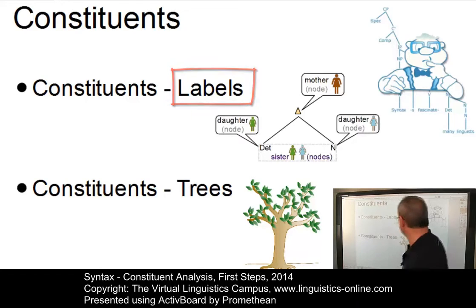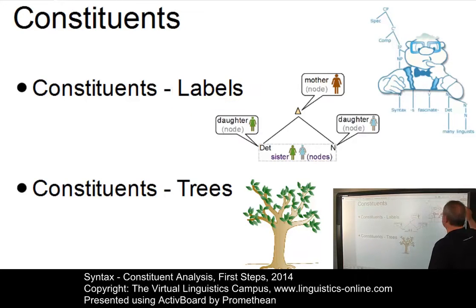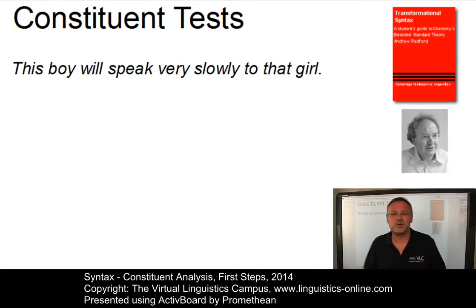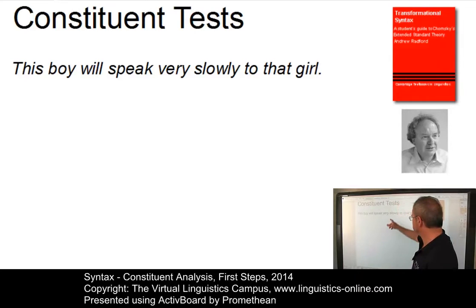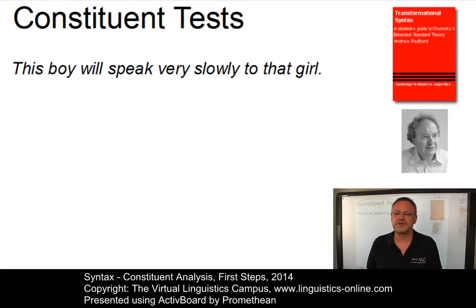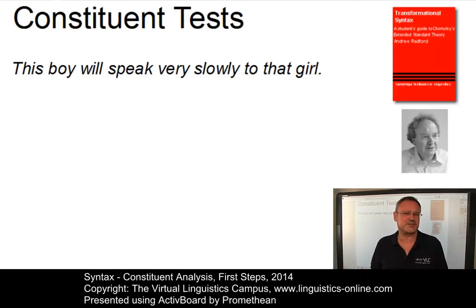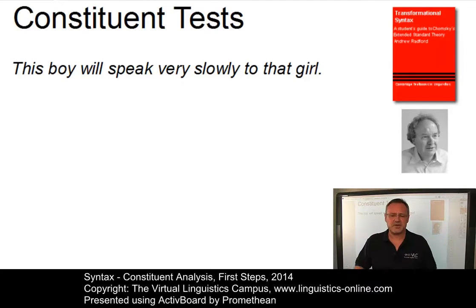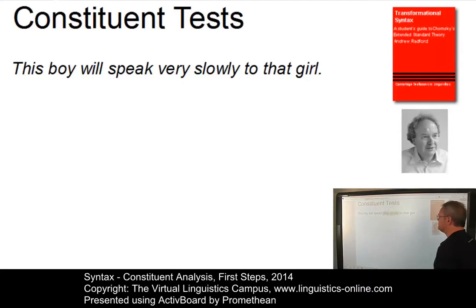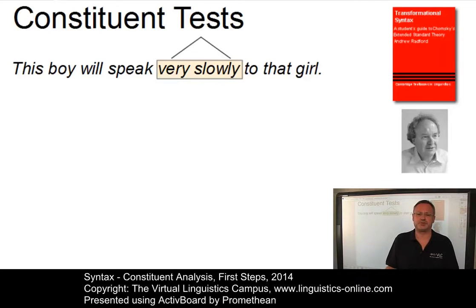Let's repeat first. In the e-lecture Constituent Tests, we looked at the sentence 'this boy will speak very slowly to that girl,' a sentence taken from Andrew Radford's 1977 book Transformational Syntax. And we decided that, for example, 'very slowly' is a constituent.